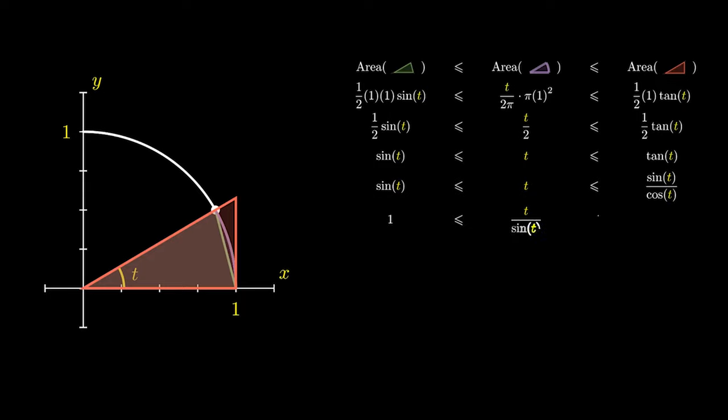Dividing out by the sine, and taking reciprocals, we obtain that the cosine of t is not more than the sine of t over t, which in turn is not more than 1.